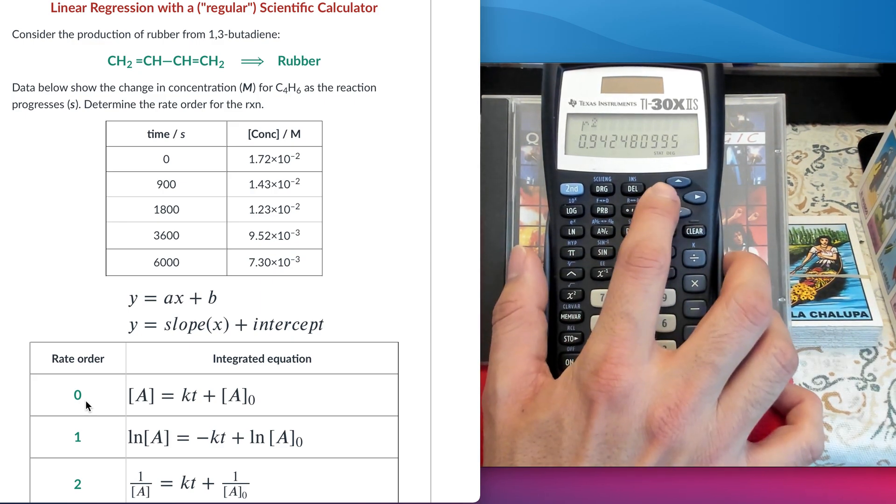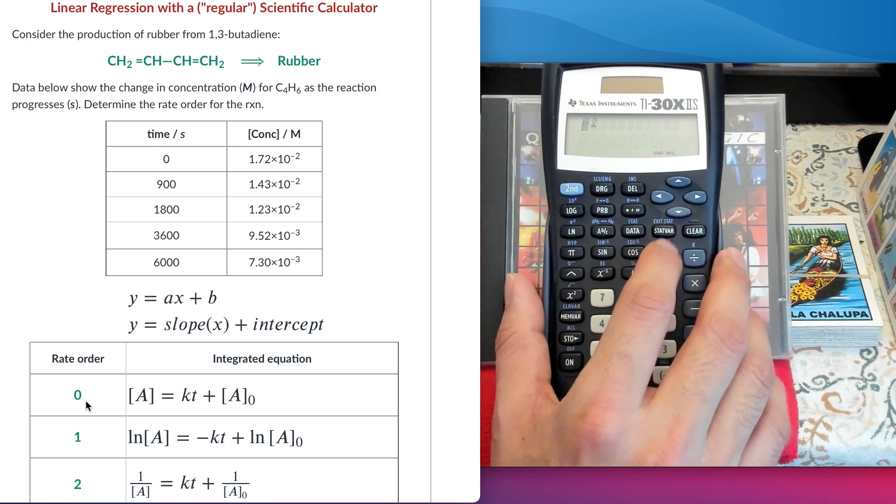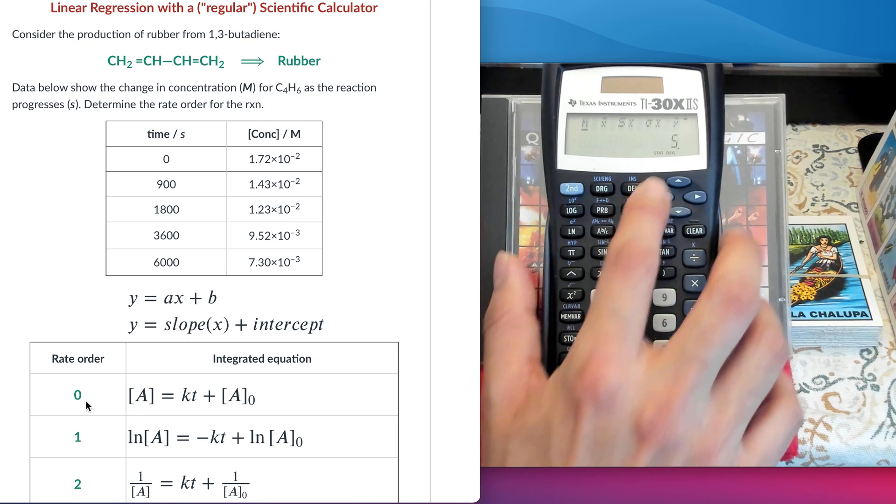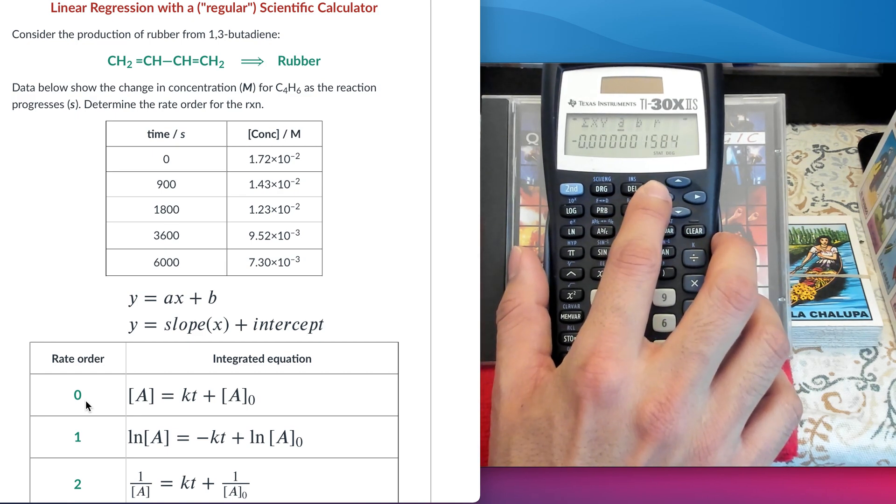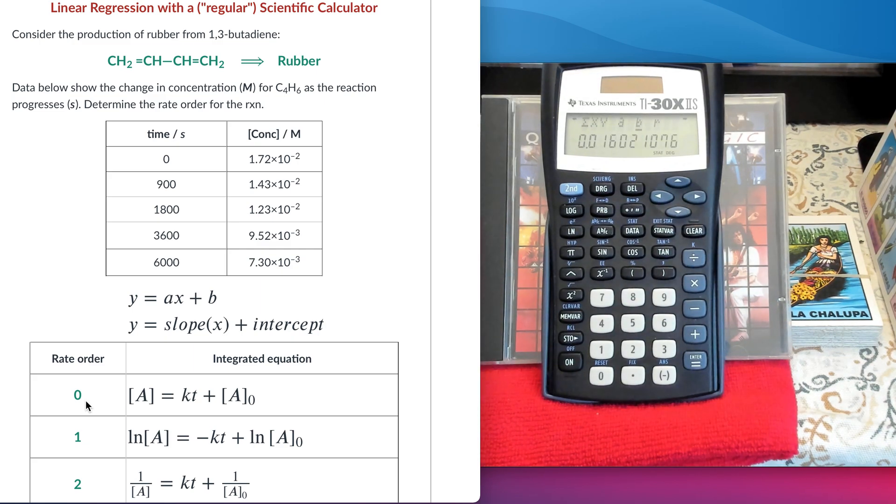Note the values of R square, and also the values of the slope, and the value of the intercept. For now, we cannot conclude anything. It looks okay, 0.94. But, what I have to do is to run regressions for every single one of these models, and compare which one fits better to the data.